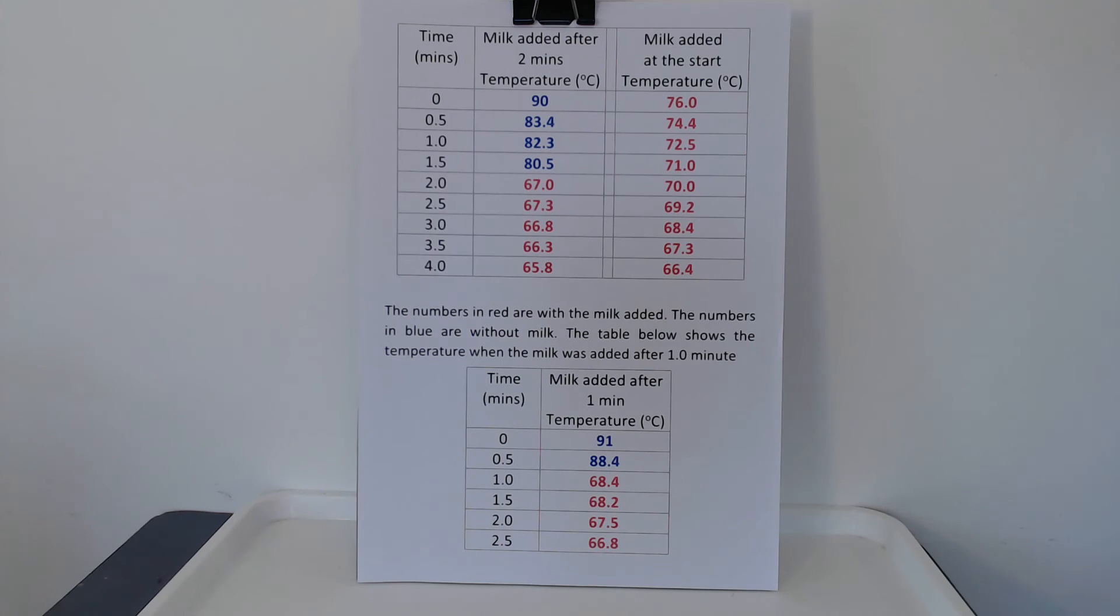Right. These are my results that I took off camera. Now, let's look at the top table first. The first column is when I added the milk after two minutes. Now, the blue numbers represent just the coffee cooling down. And at two minutes, you can see there's a sharp drop when I added the milk. And you can see that at that point, the temperature dropped immediately below my 68 degrees that I was after for drinking.